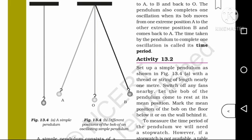One complete back-and-forth swing is called a time period. For Activity 13.2, set up a simple pendulum as shown in figure 13.4a with a thread or string of length nearly 1 metre. Switch off any fans nearby.